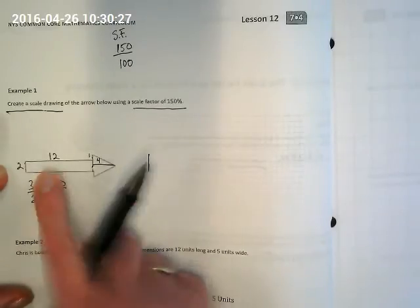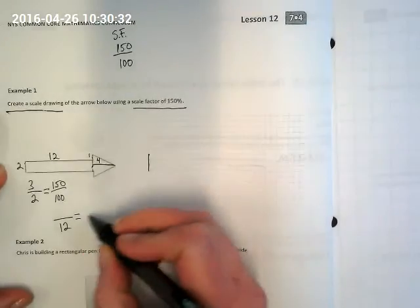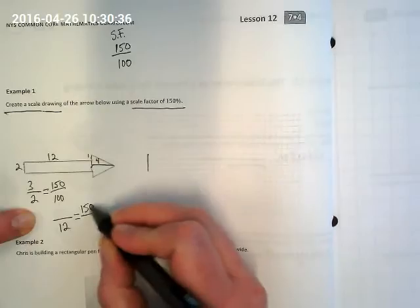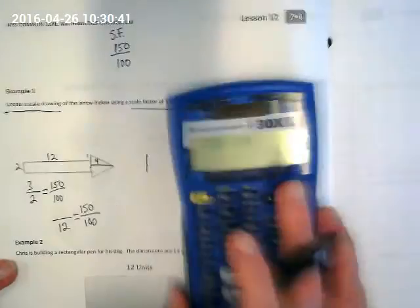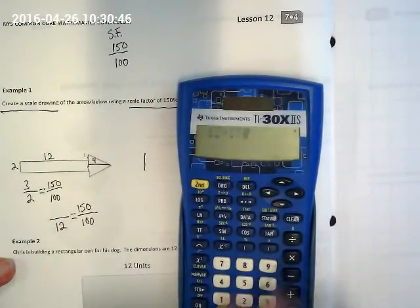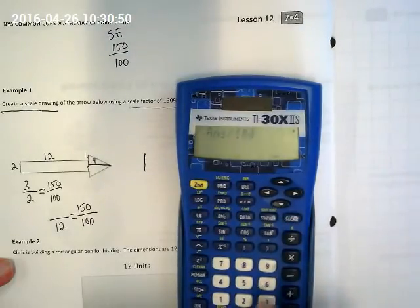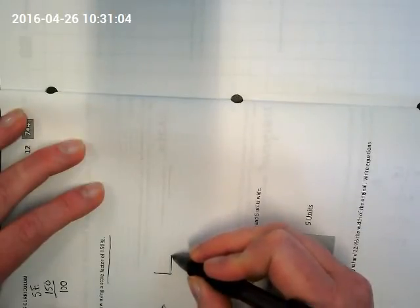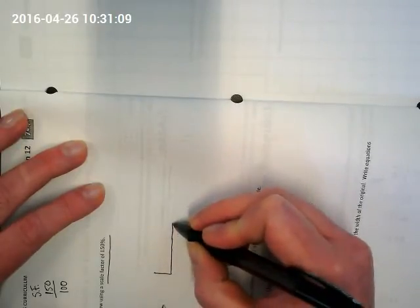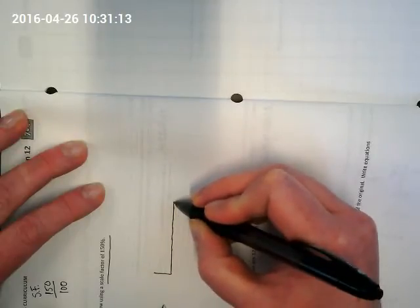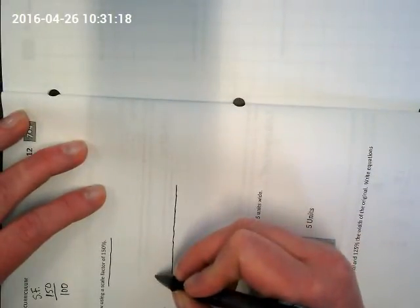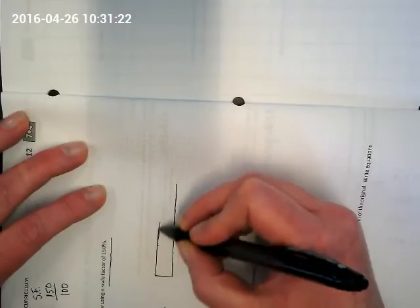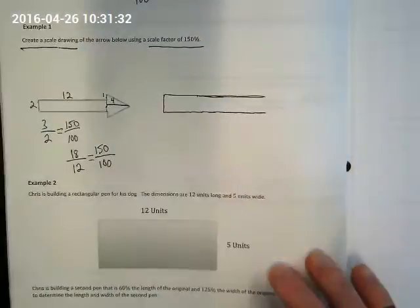Now we have to do the same thing to find the side length for 12. Well, 12 is the original. We don't know what the new side length is yet, but we do know we have to compare it to 150 over 100 as our scale factor. This time we're doing 12 times 150, and I'm dividing by 100. We get 18. And we're going to count over 18 spaces. I'm going to turn mine sideways. It's easier for me to count. And then we can do the other line to match it. My arrow is not going to be as straight and neat as the original, but it will be 150 percent bigger.